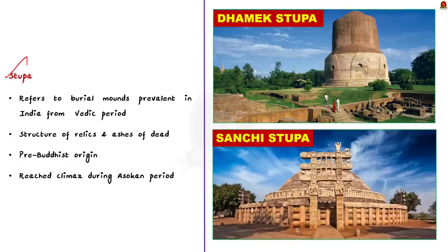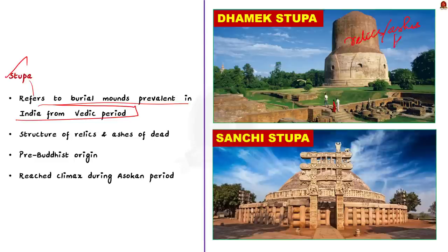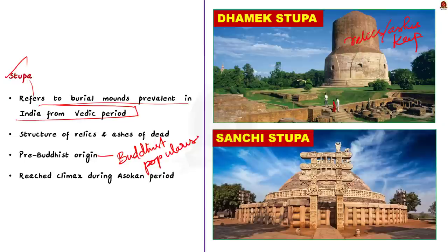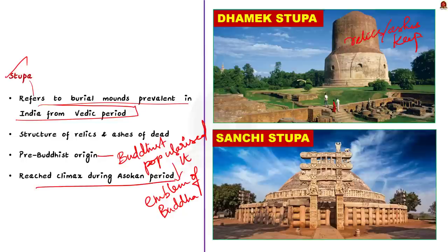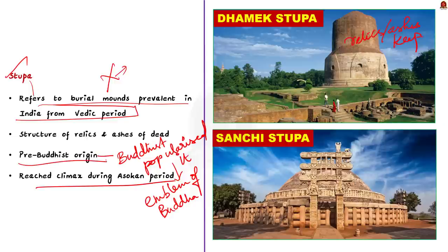What does the term Stupa mean? Stupa refers to burial mounds prevalent in India from the Vedic period — a structure in which relics and ashes of the dead were kept. The tradition of erecting Stupas may have been pre-Buddhist, but they came to be associated with Buddhism subsequently because of the higher importance given to them by the Buddhists. During the period of Ashoka, the art of Stupas reached its climax and many Stupas were erected. So if a prelims question states that Stupas were of Buddhist origin, that statement is wrong — Stupas had a pre-Buddhist origin.